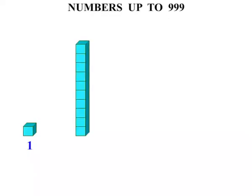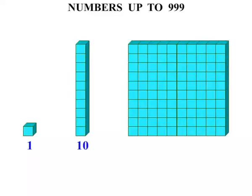Now in this lesson we will do some work on numbers up to 999. We are going to use some blocks. We will call this one a short, which is the number 1. This one here we will call a long, which has 10 blocks. And this one here we will refer to as a flat, which has 100 little blocks. So we will call them shorts, longs, and flats.